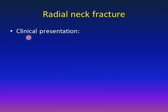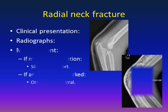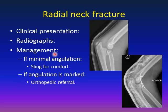Radial neck fractures present with pain, swelling, and deformity of the affected elbow. X-rays show the fracture — the case shown demonstrates marked angulation and some subluxation of the proximal ulna with the distal humerus. Management: if angulation is minimal, treat with a sling for comfort. If angulation is marked, refer to an orthopedic surgeon for reduction and fixation. In the case shown, closed reduction was obtained and fixed with two K-wires, correcting the angulation.